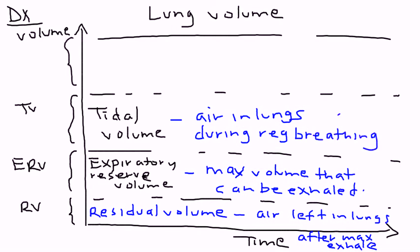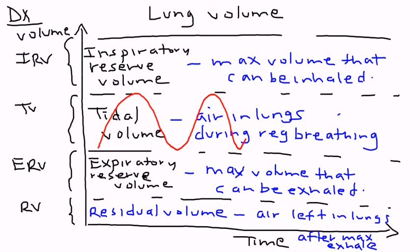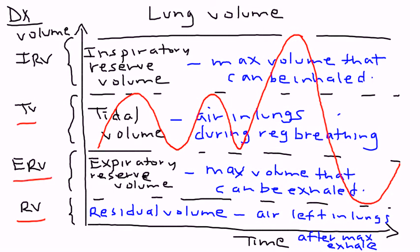The top one is the IRV — the inspiratory reserve volume, which is very similar to the ERV except it involves inspiratory measurements. The inspiratory reserve volume is essentially the maximum volume that can be inhaled. So we have RV, ERV, TV, and IRV on this diagram.